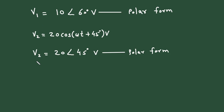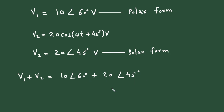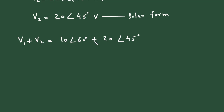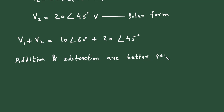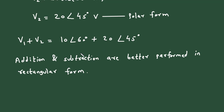Now we have to add V1 + V2. So V1 + V2 = 10∠60° + 20∠45°. It is given in polar form, and we know that addition and subtraction are better performed in rectangular form, while multiplication and division are better performed in polar form. So let us convert them.